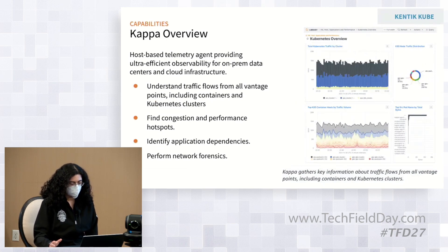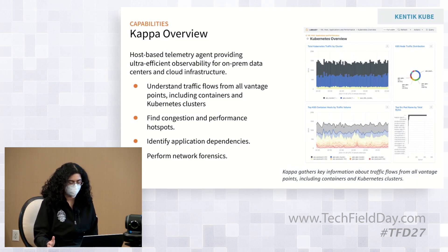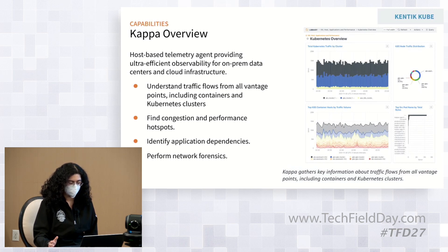Kappa is a very efficient tool for observability. It helps understand traffic flows from all kinds of different vantage points. It helps customers find congestion and performance hotspots, helps identify application dependencies, and helps perform network forensics. It's just a very useful tool to get a lot of information on the cluster.